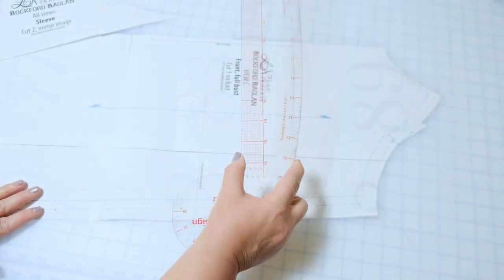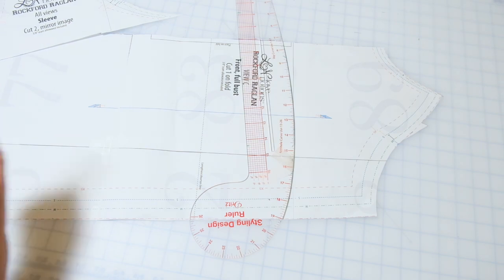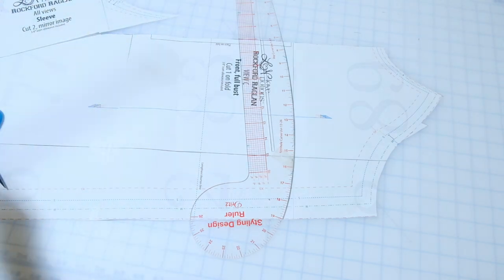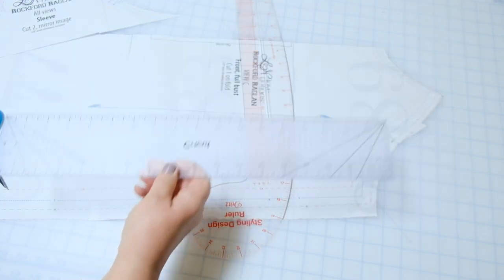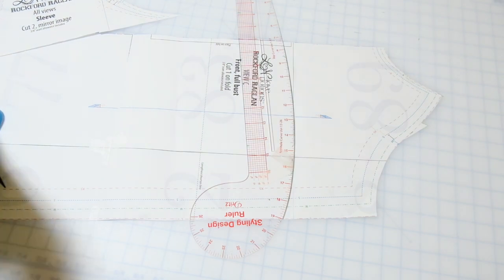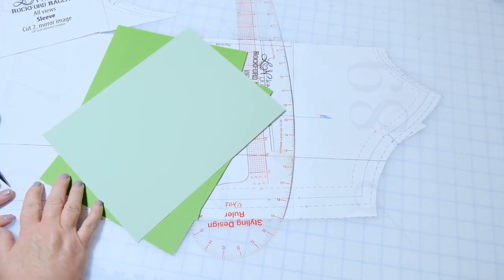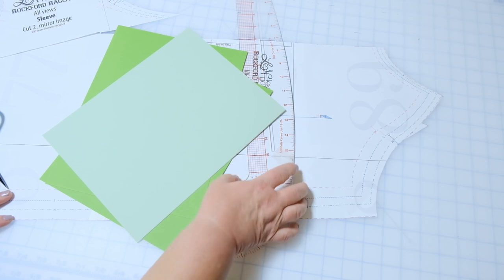I'm just going to start with the front. So you'll need all those pieces. You will need just the top portion of the sleeve piece. You don't have to print the whole thing. You can just print the top neckline area. You'll need a curved ruler, some scissors, and a straight ruler.